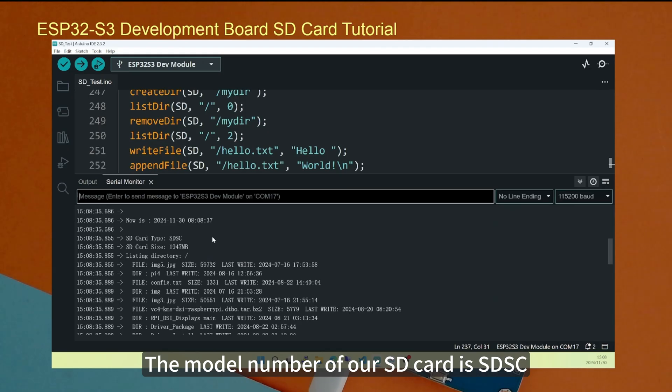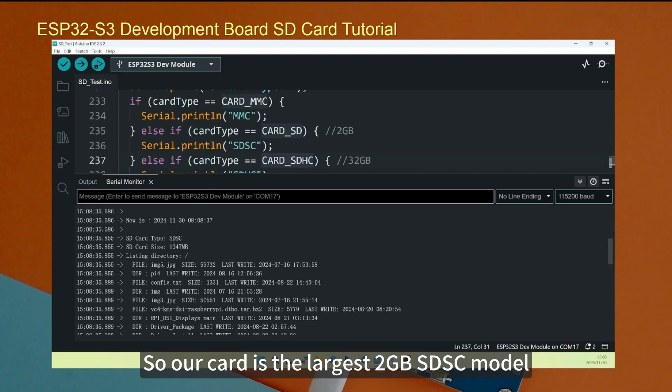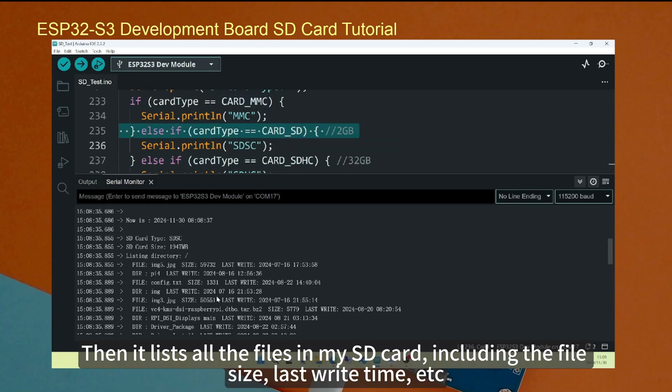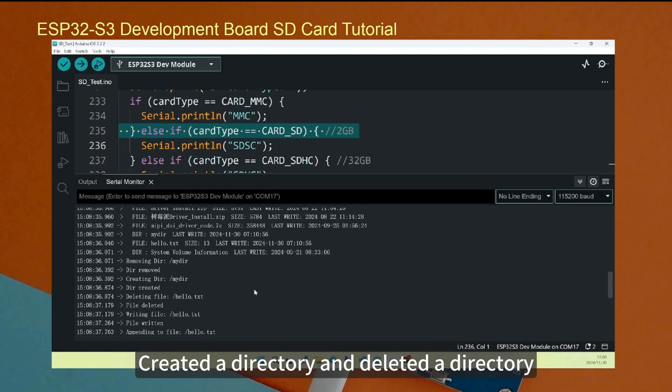You can see that it lists various operations here. The model number of our SD card is SDSC. You can see that it is already written above. So our card is the largest 2GB SDSC model. Then it lists all the files in my SD card, including the file size, last write time, etc.